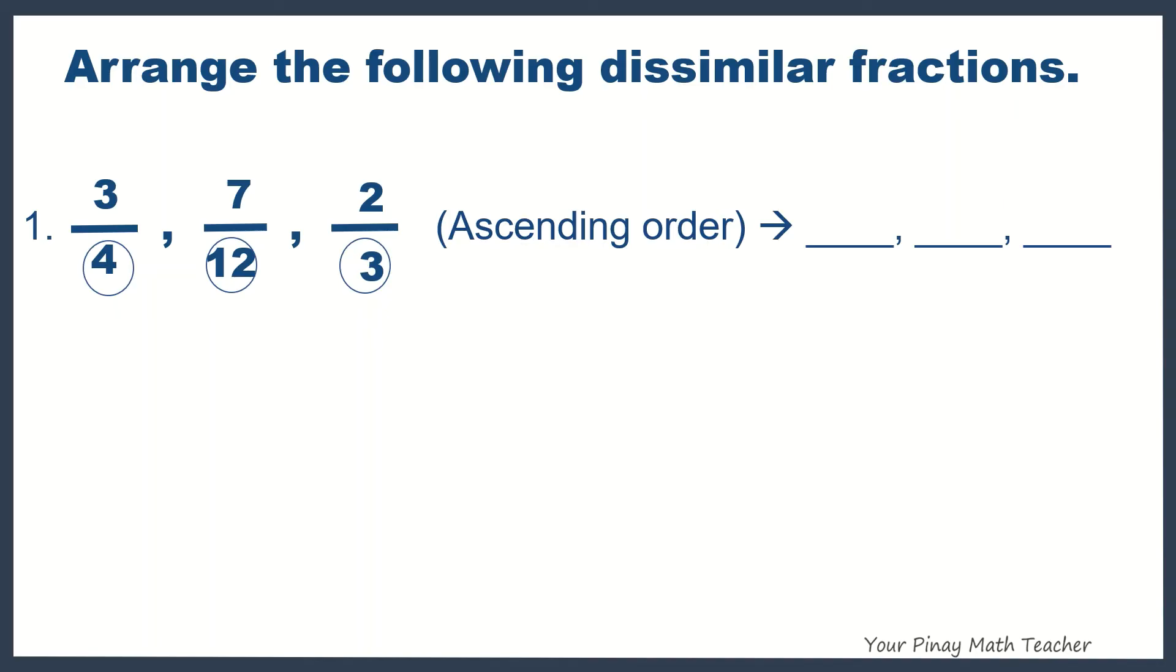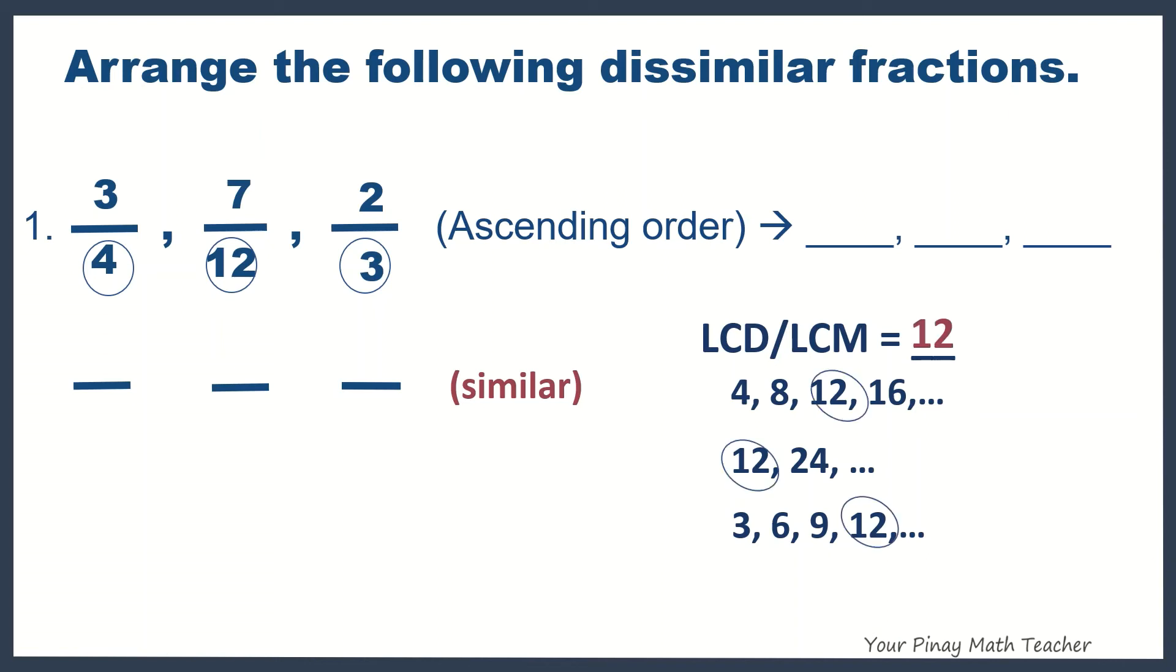So, since the denominators are different, we have to make them similar by finding its LCD or LCM. So, these are the first few multiples of 4, 12, and 3. Based on the list, our LCD or LCM is 12.